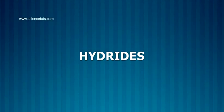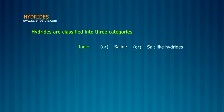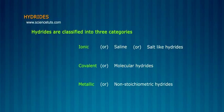Hydrides are classified into three categories: ionic or saline hydrides, covalent or molecular hydrides, and metallic or non-stoichiometric hydrides.